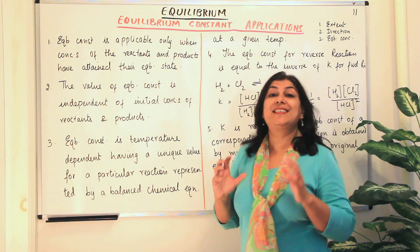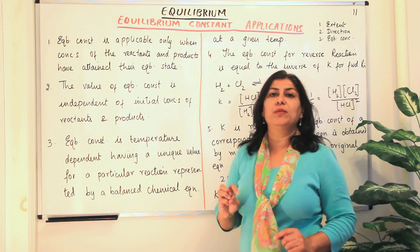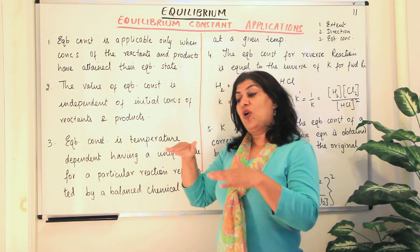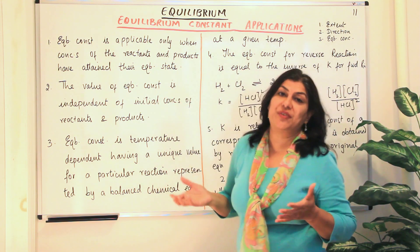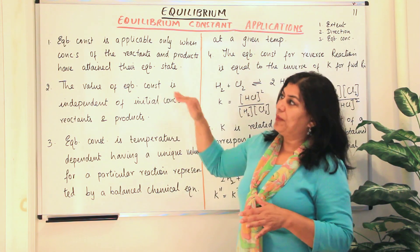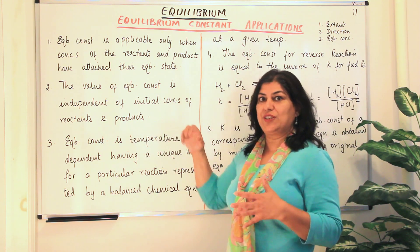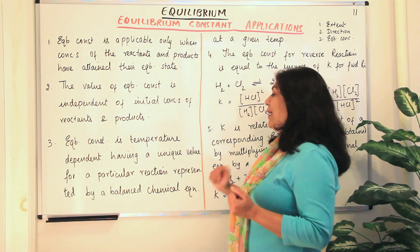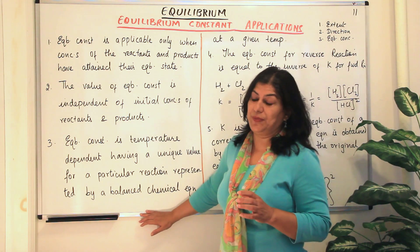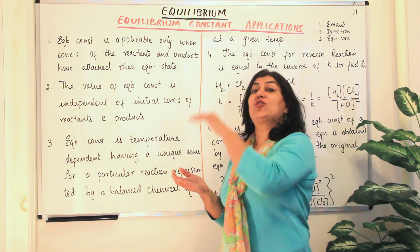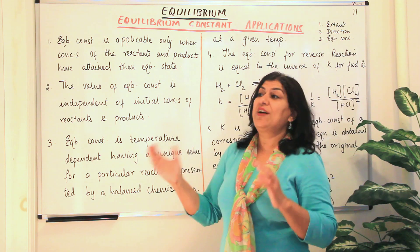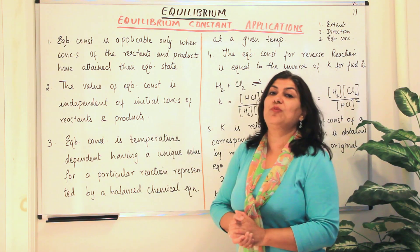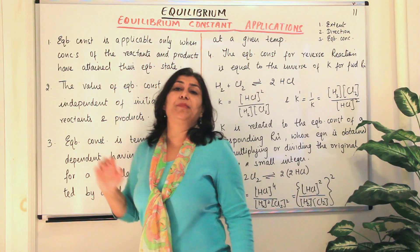The next point: equilibrium constant is temperature dependent. Whenever we have solved a problem or talked of an equilibrium, we always mention the temperature at which the equilibrium is established. The equilibrium constant of one particular reaction may vary if the temperature is different, because for that particular temperature, the concentrations are fixed. The same reaction with the same stoichiometric coefficients but at a different temperature will give a different equilibrium constant value, since temperature changes favor either the forward or backward reaction, affecting equilibrium concentrations. So equilibrium constant is temperature dependent, having a unique value for a particular reaction represented by a balanced chemical equation.